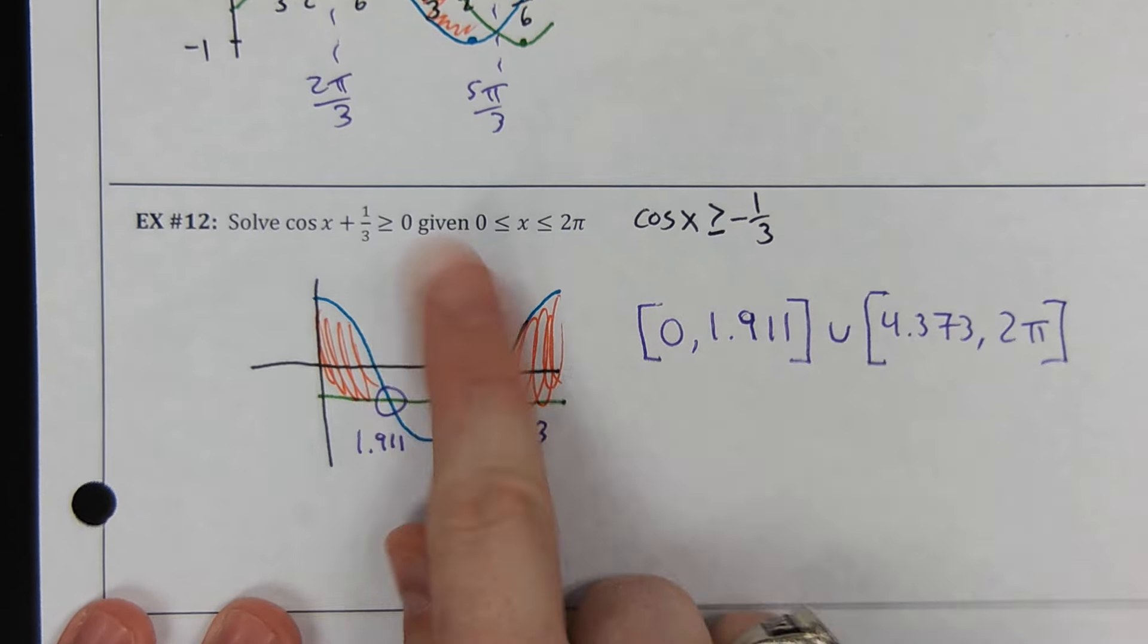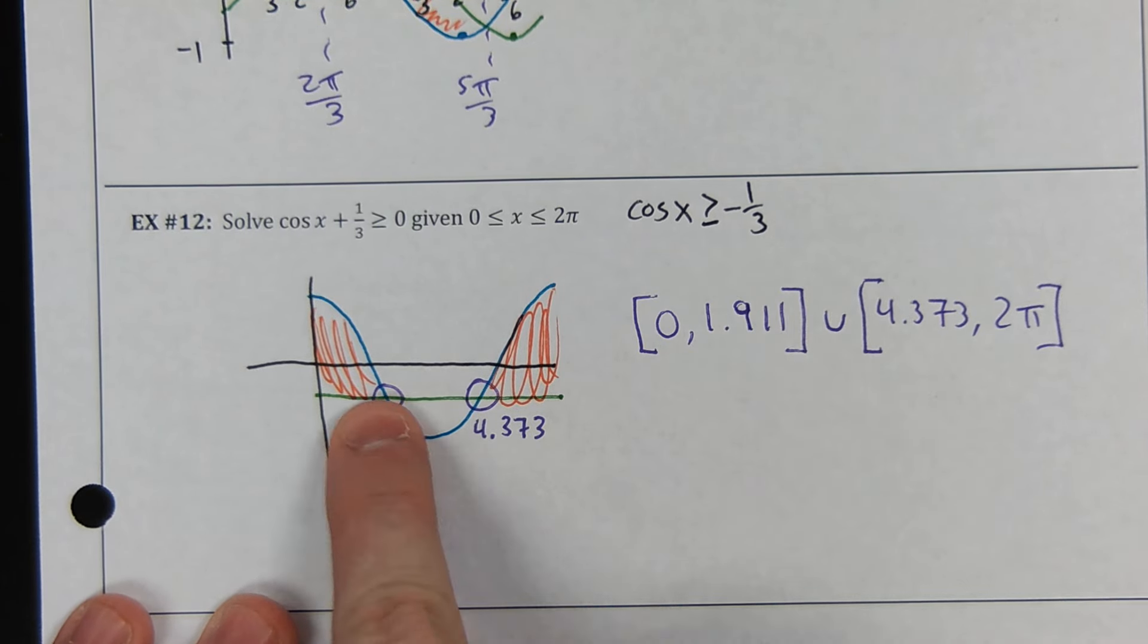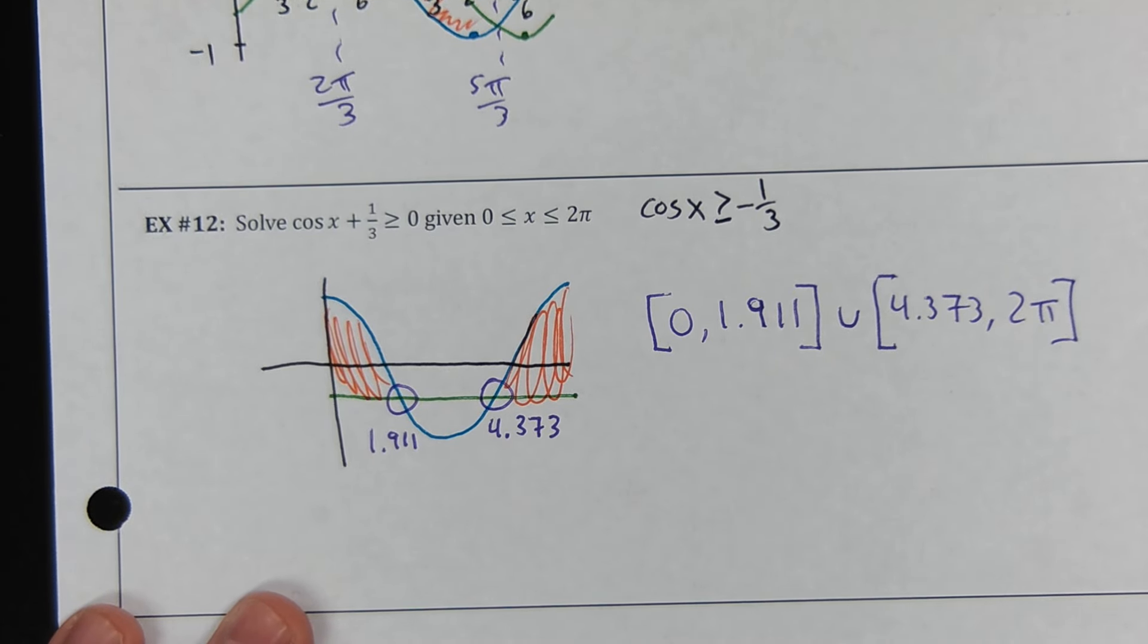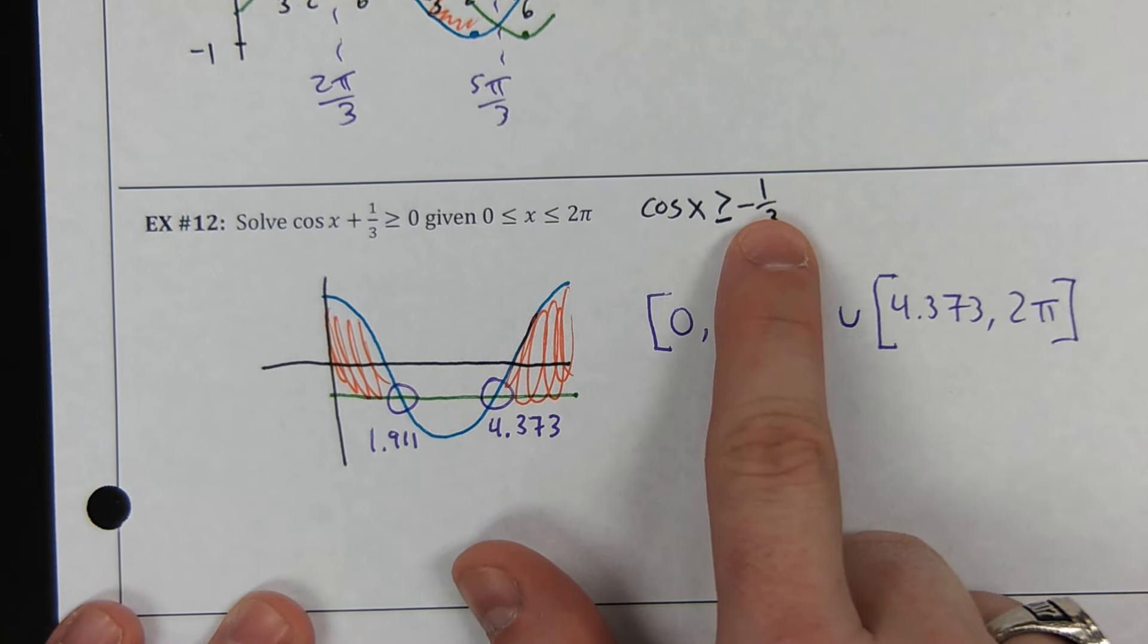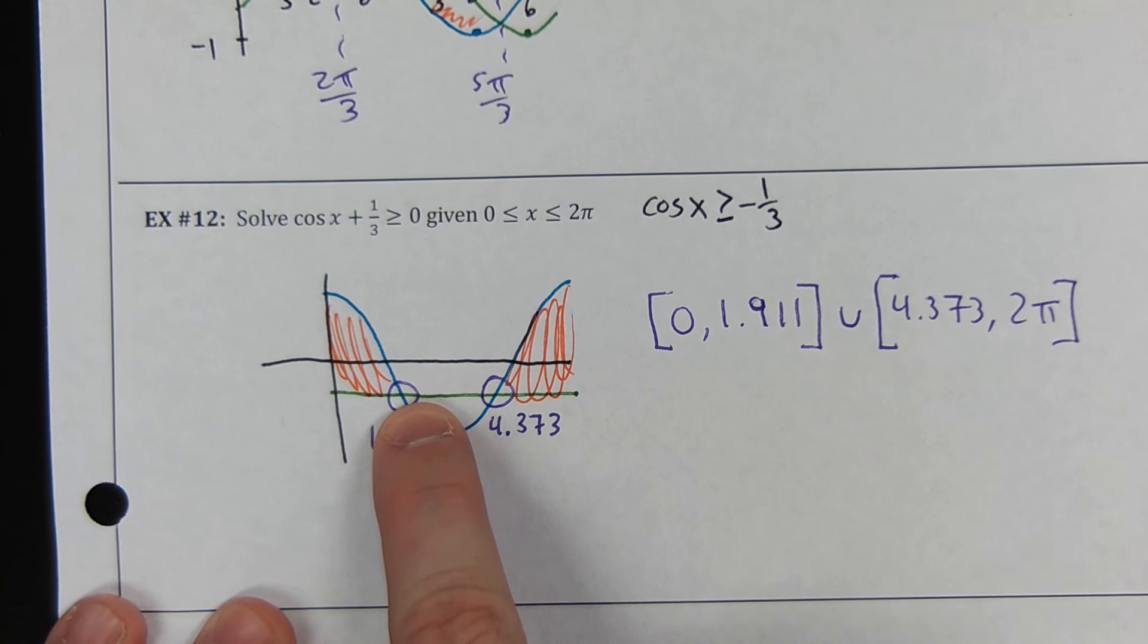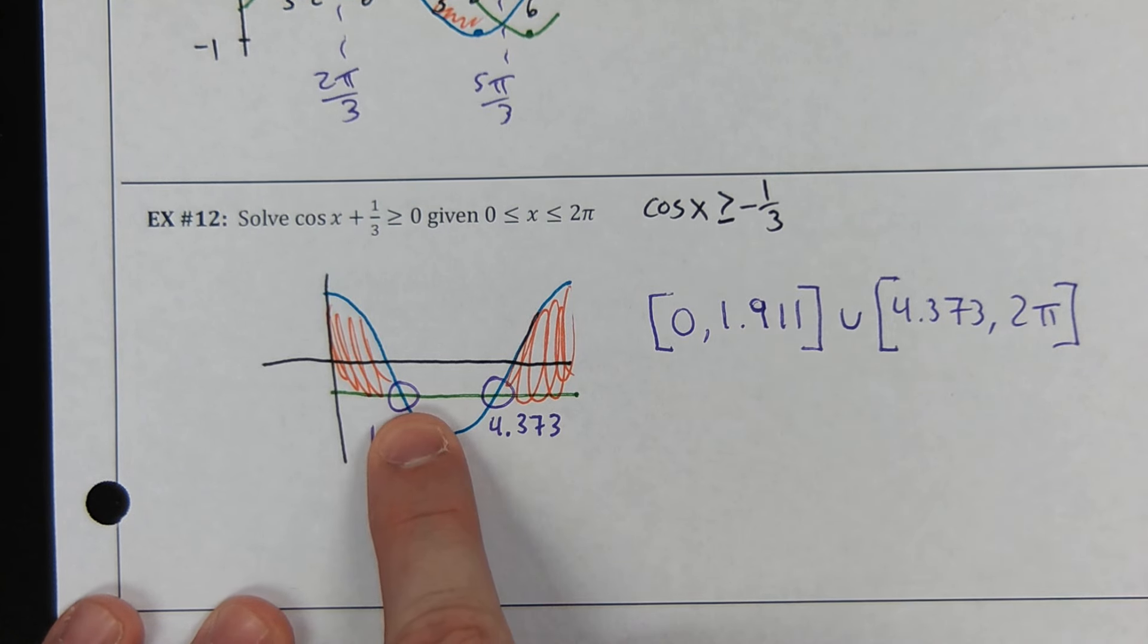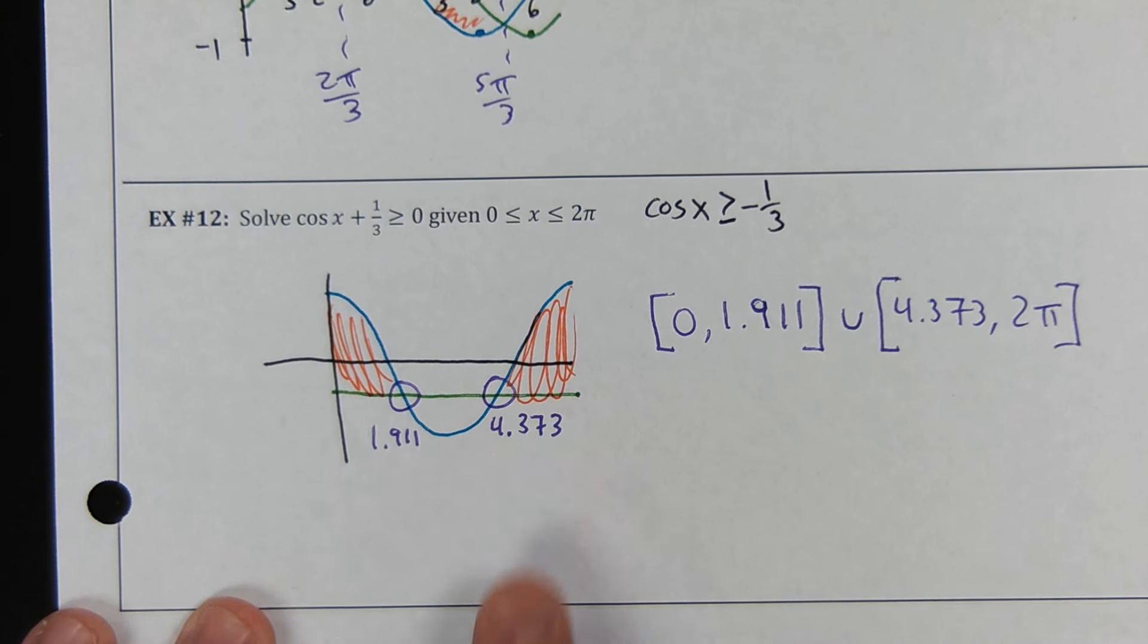And then this one, we moved negative 1 third over to one side just because it's easy to do second trace intersect to see where two graphs intersect each other. By the way, we could have used, once we knew that the graph looked like this, we could have used cosine inverse here to get the first solution. Because cosine inverse would have given us one solution and since it was a negative argument for cosine inverse, we know that its answer would have come from quadrant 2, which would have been that one.